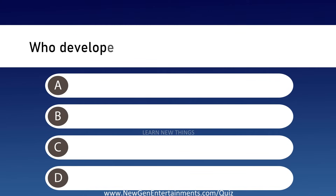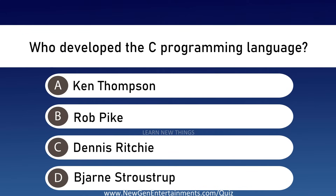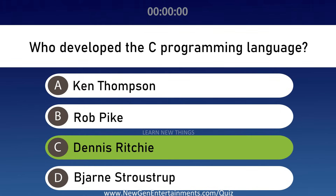Who developed the C programming language? Options are A: Ken Thompson, B: Rob Pike, C: Dennis Ritchie, and D: John Stroustrup. Answer is Option C, Dennis Ritchie.